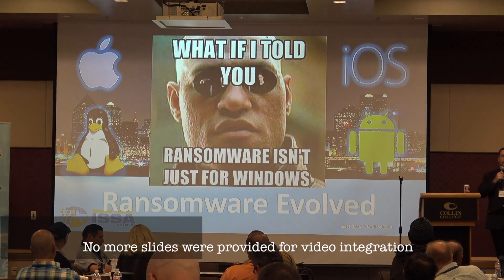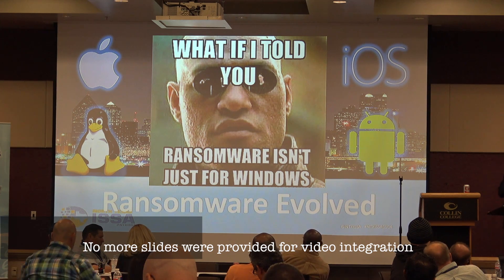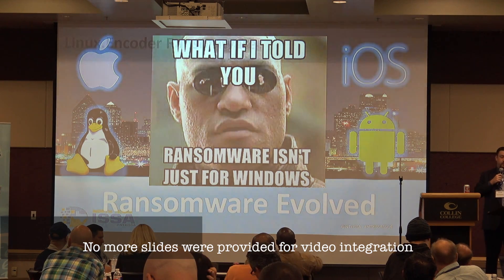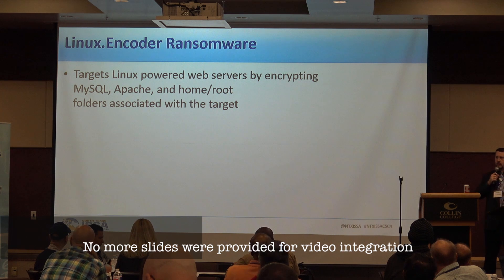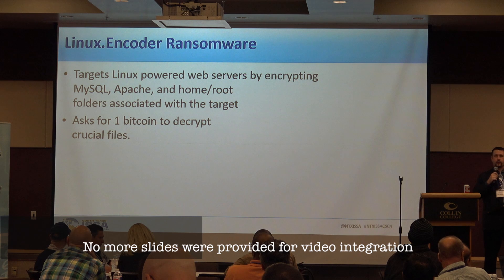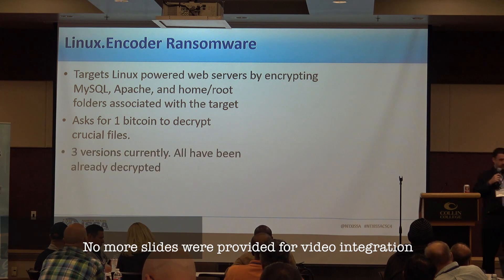We've only touched on ransomware in Windows, but there's so much more. It's evolved. Let's touch on Linux — the Linux Encoder ransomware. This targeted web servers, Linux machines running SQL and Apache, going after the home folder and web folders. It would only ask for one Bitcoin, which is a fairly small amount. There have been three versions, and all three were fairly quickly decrypted.